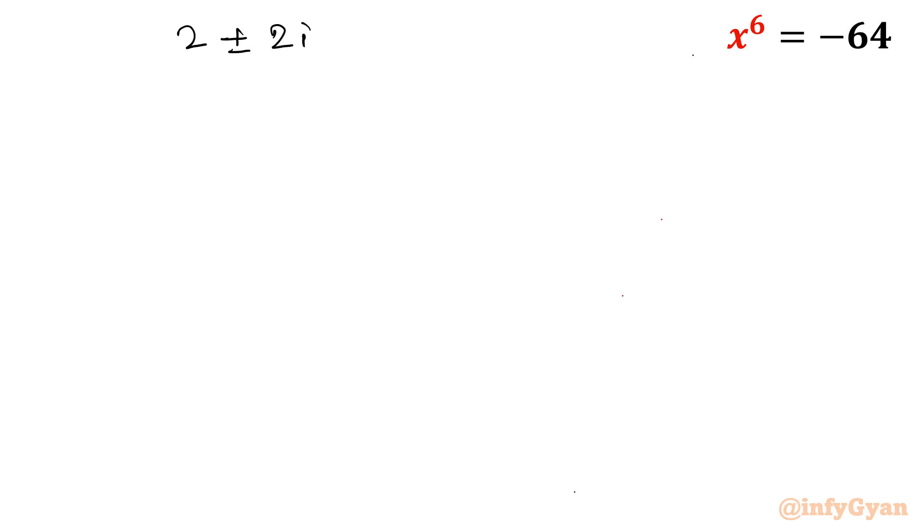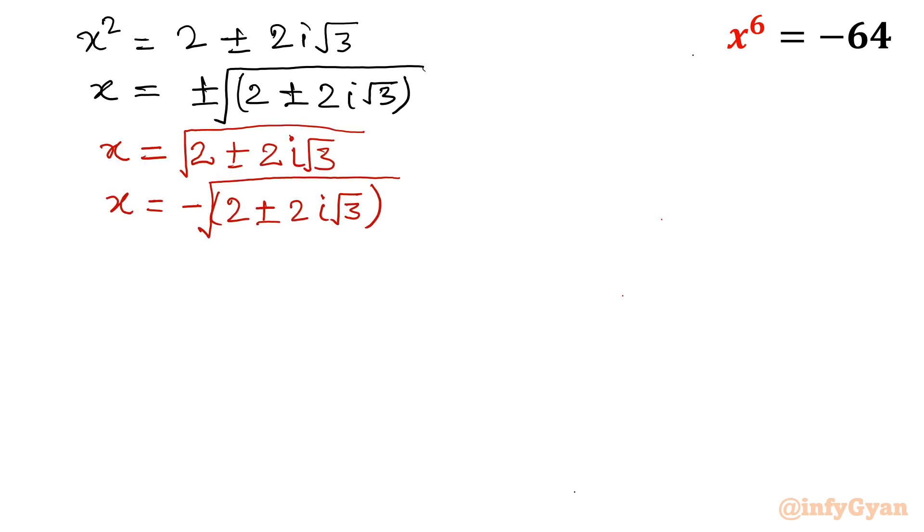This is our x^2. Now let's solve x^2 = 2 ± 2i√3. So x will become ±√(2 ± 2i√3). That value will come out. So there are 4 roots we can write from here. x = √(2 ± 2i√3) and -√(2 ± 2i√3). You can solve further. Then you can match with your complex number result also. It is ±2i. So there are 6 roots or 6 solutions.